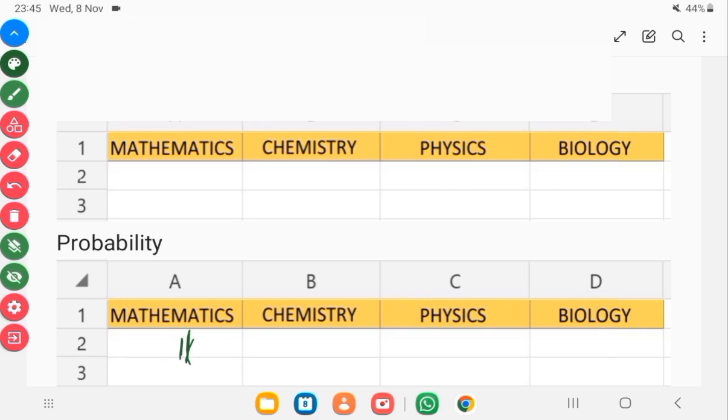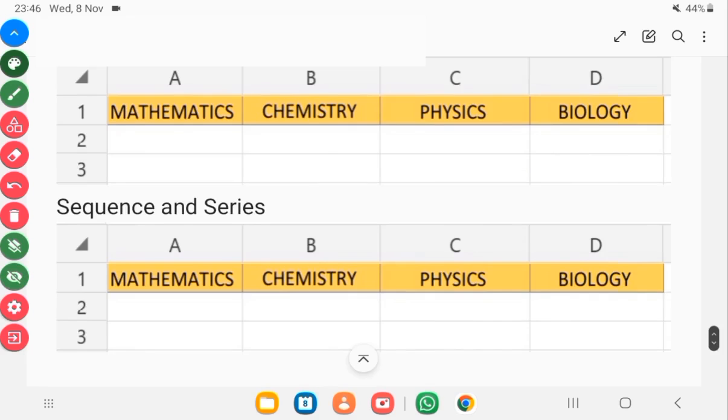Sequence and series. Sequence and series is found in core mathematics as well as elective mathematics. So you need to understand it very well. These topics are always dropping in the final year exam.